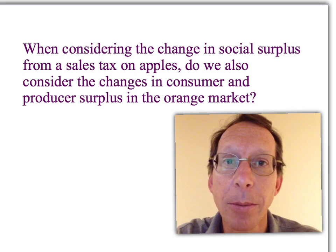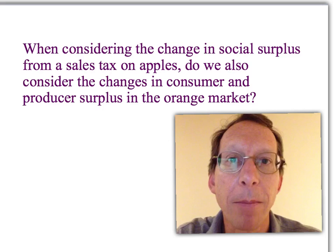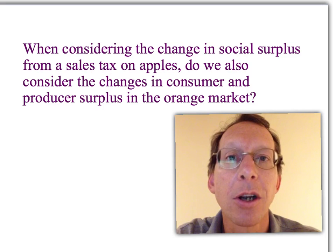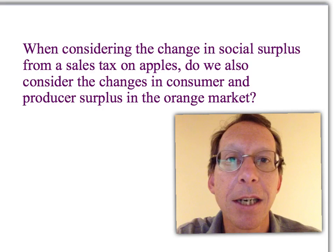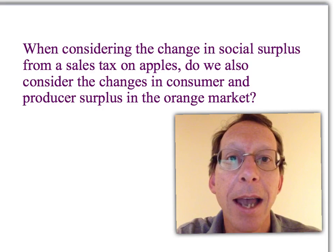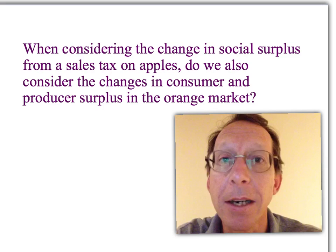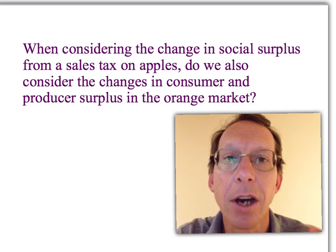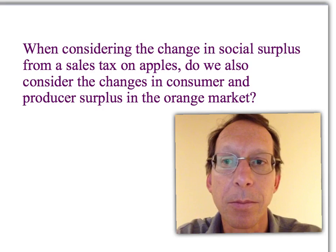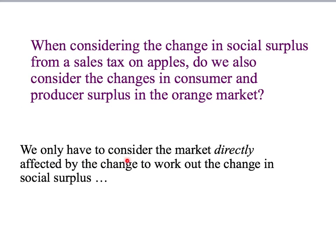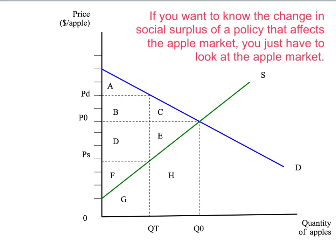In later courses in economics, you'll learn why that's the case. But it comes back to our measure of consumer surplus based on compensation — how much do you have to compensate a consumer if you take away the goods from them — and it reflects that producer surplus is closely related to profits. That's well past this course, but it's really important to understand the principle, because it's one that a lot of students make a mistake about. To summarise: we only have to consider the market directly affected by the change to work out the change in social surplus. If you want to know the change in social surplus due to a policy that affects the apple market, you only have to look at the apple market.